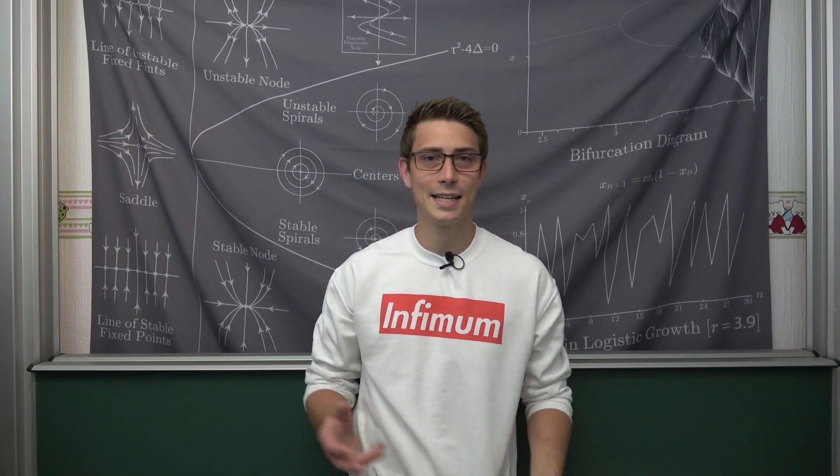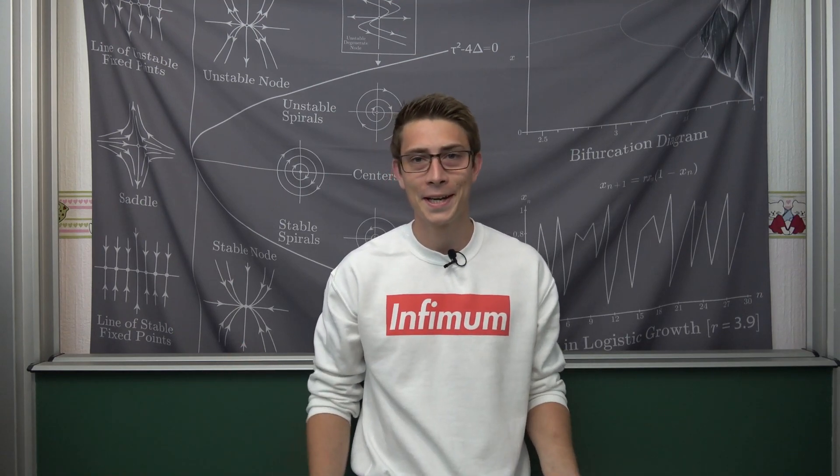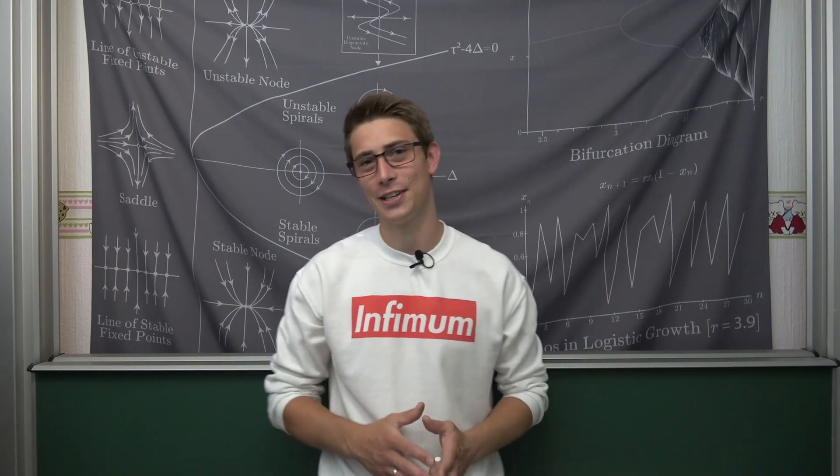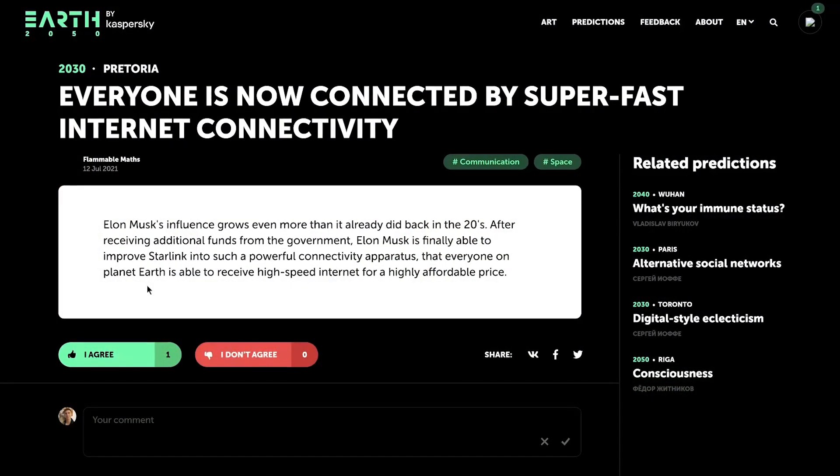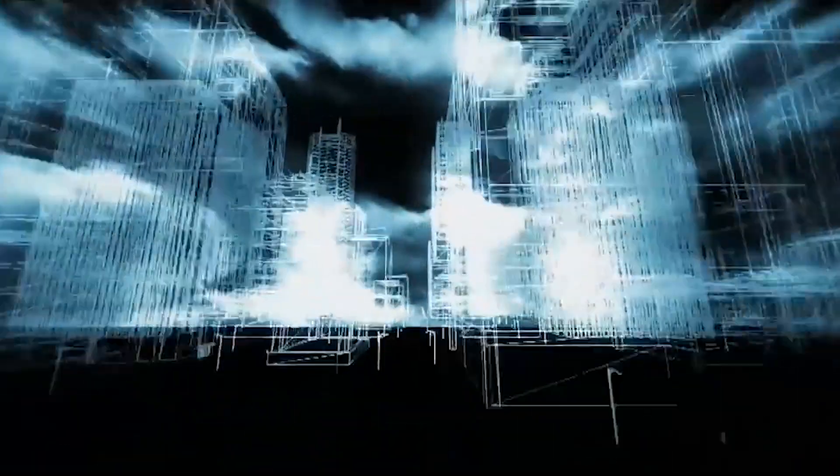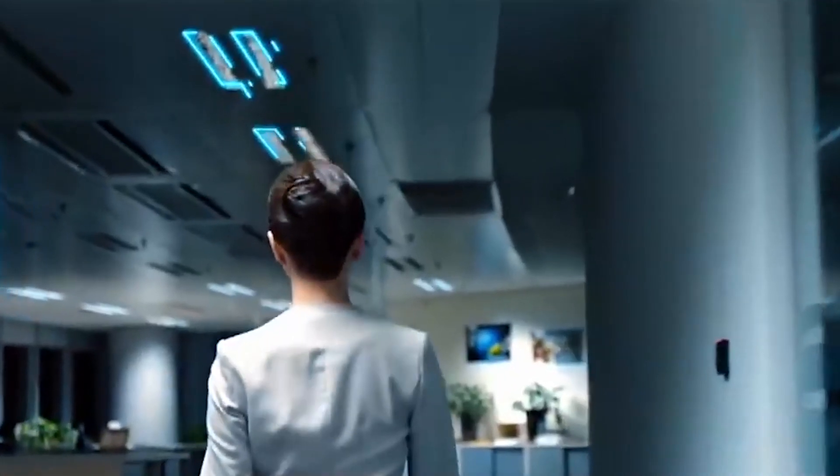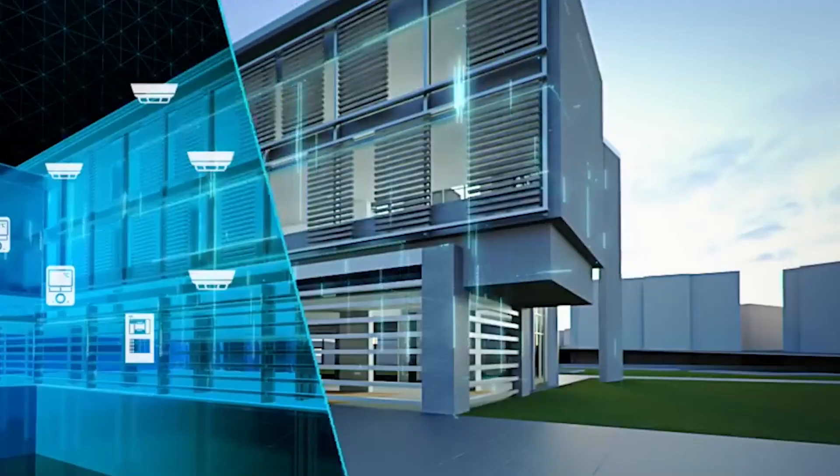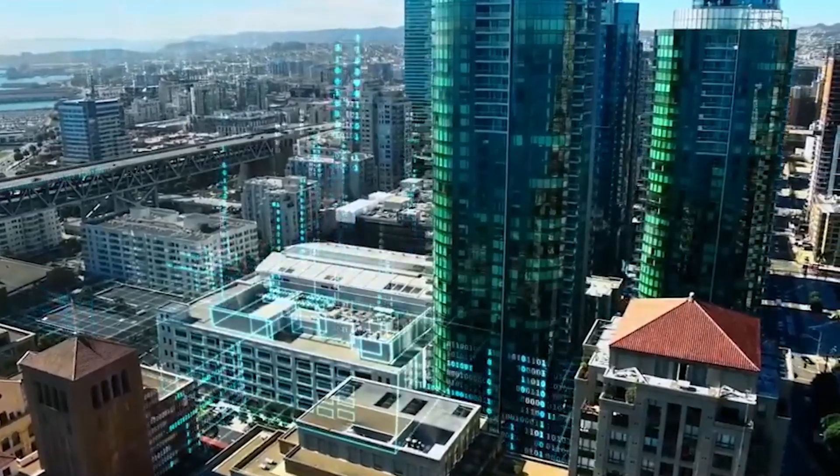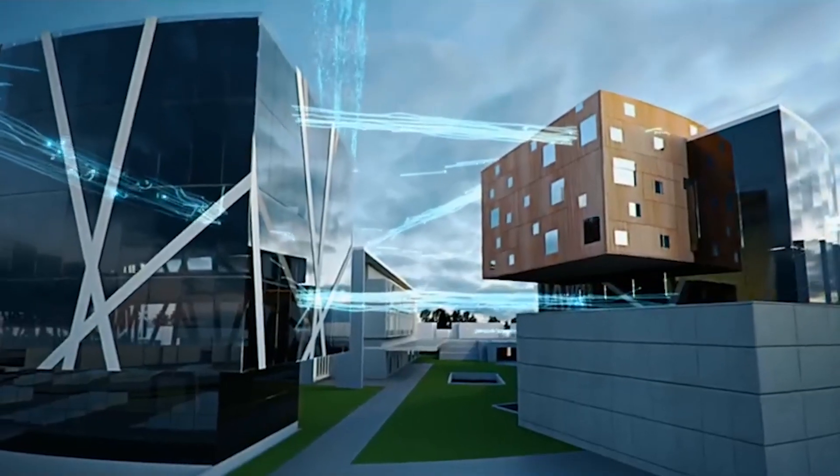And the best thing about it is that it's for completely free. Everyone can predict the future in some kind of way. Even I posted my own prediction in regards to the last video where I basically featured Elon Musk. Everyone is now connected by super fast internet connectivity. Elon Musk's influence grows even more than it already did back in the 20s. After receiving additional funds from the government, Elon Musk is finally able to improve Starlink into such a powerful connectivity apparatus, that everyone on planet Earth is able to receive high-speed internet for a highly affordable price.